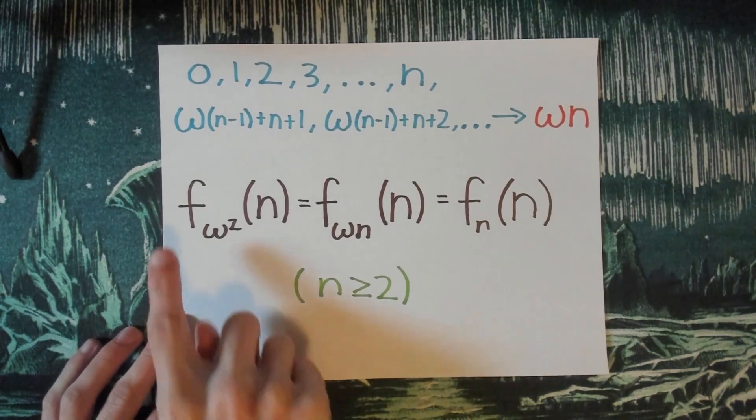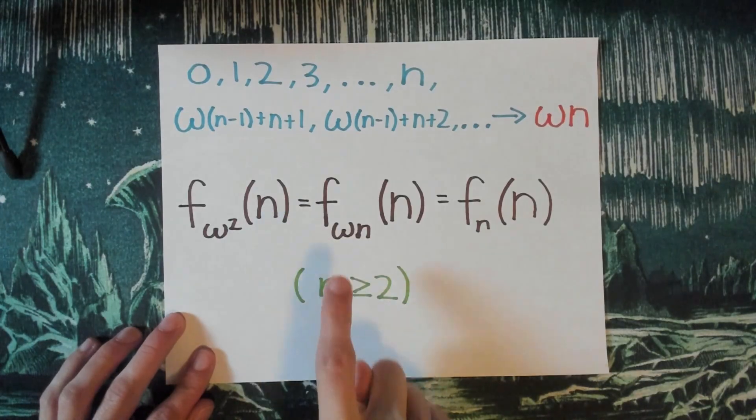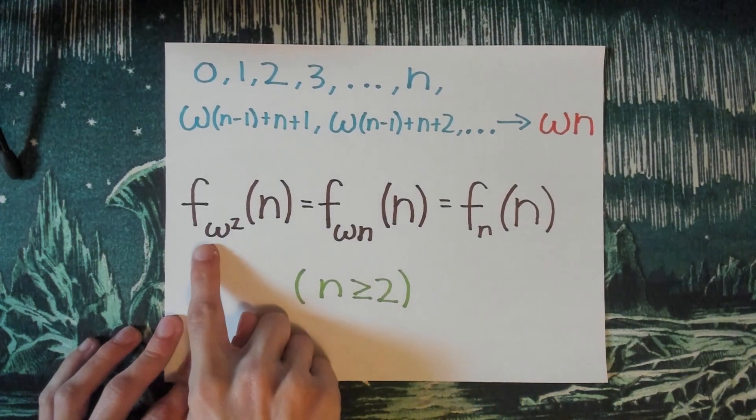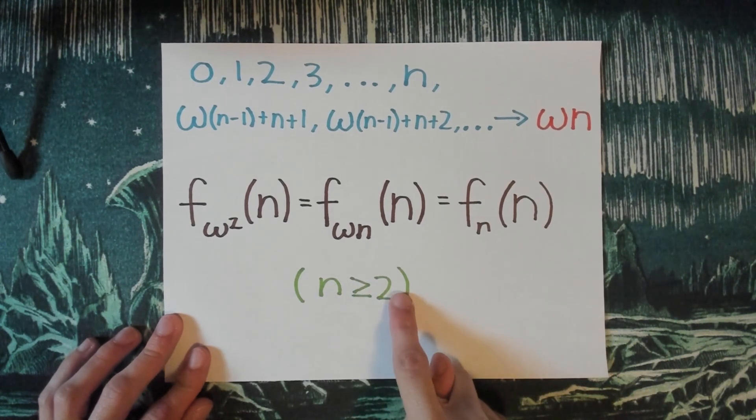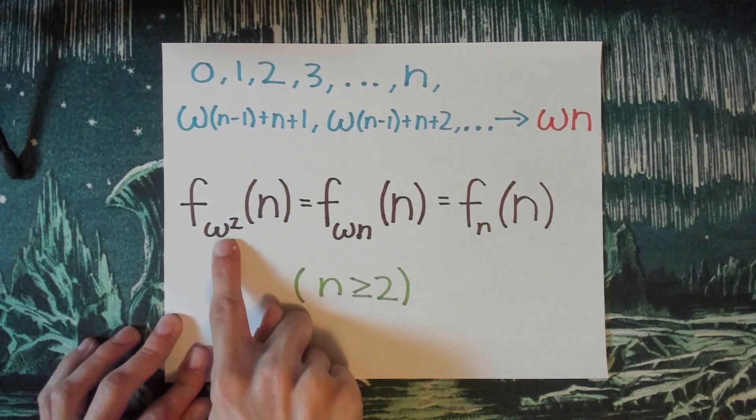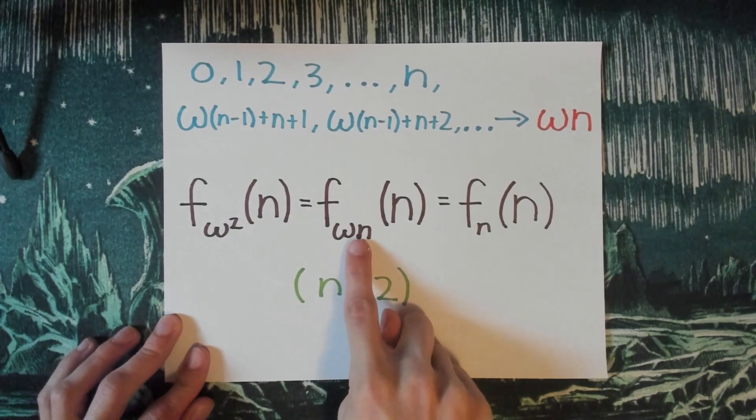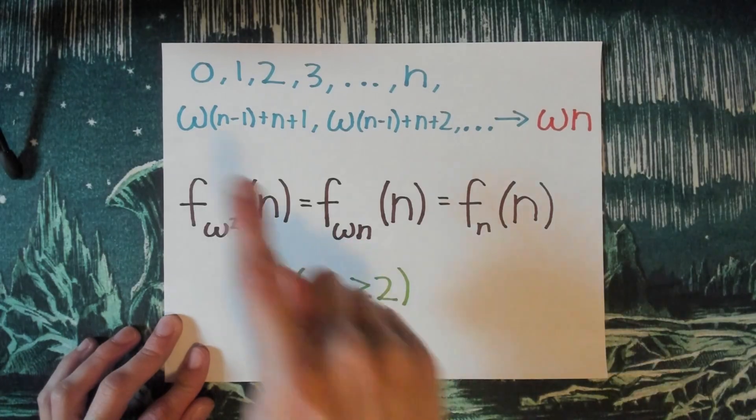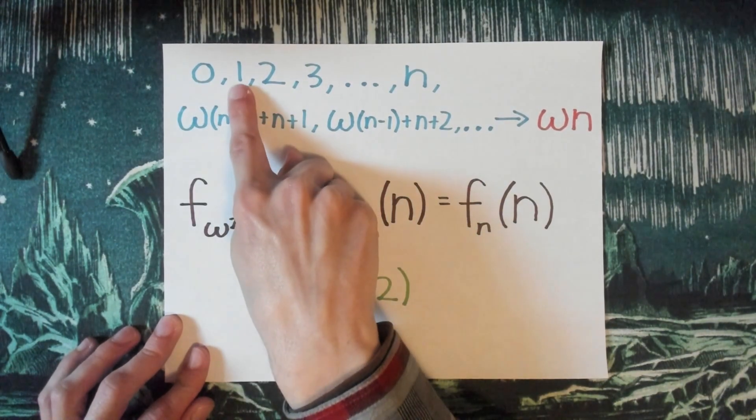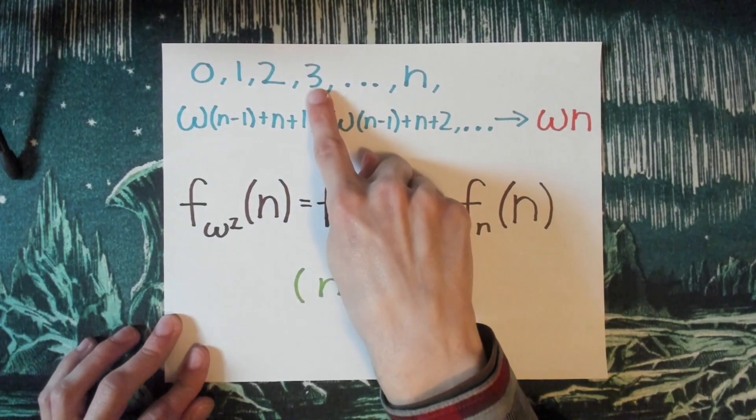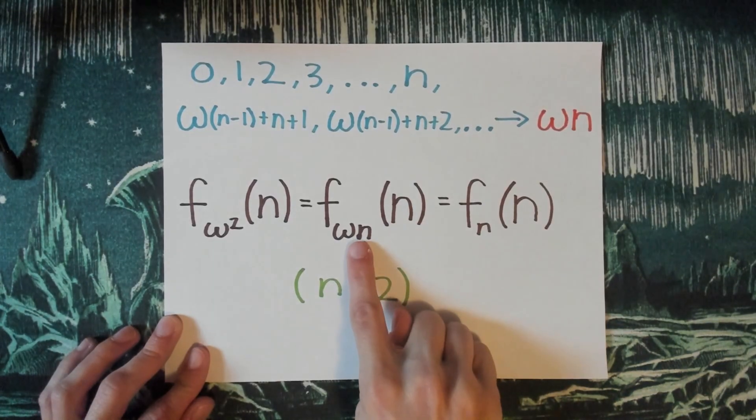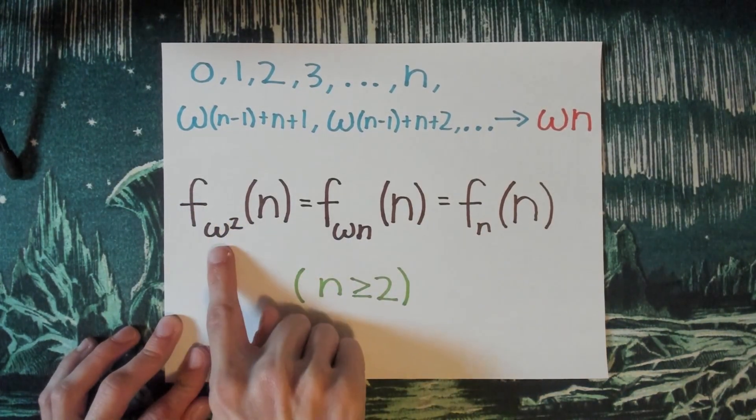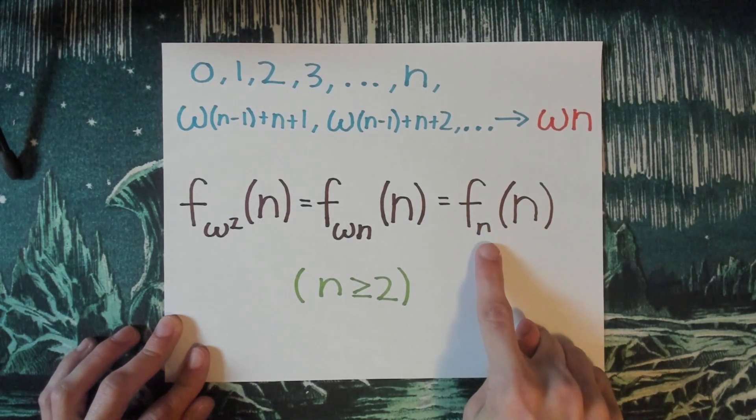Let's think more generally. So f omega squared of n, we'll let n be greater than or equal to 2, right? We're only really interested in how f omega squared grows in the long run. So nothing important is being lost by just focusing on n greater than or equal to 2. So we plug in the n to omega squared to get omega times n. Then we plug in the n into the omega times n to get, let's see, omega n of 0, omega n of 1, omega n of 2, omega n of 3. So the omega times n gets replaced with n, and we see that f omega squared of n is equal to f sub n of n.